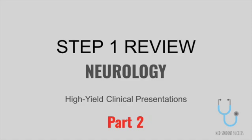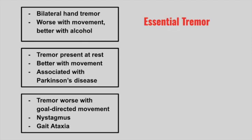Welcome back to Part 2 of Neurology High Yield Clinical Presentations. The first patient presents with a bilateral hand tremor. It's worse with movement and better with alcohol. This is an essential tremor. It can also get worse with anxiety or stress.